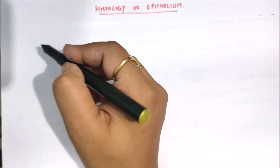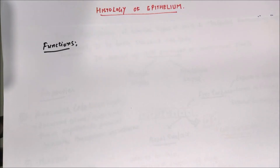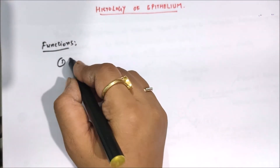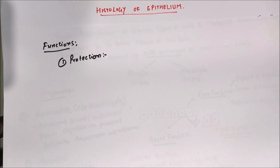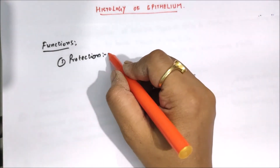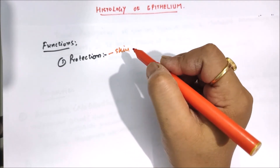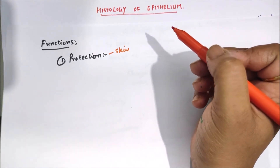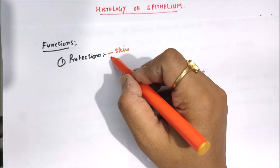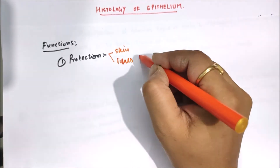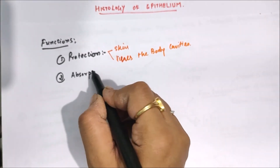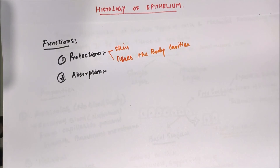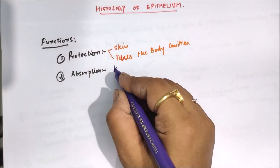Now let us discuss the functions of the epithelium. The first function is protection. The skin acts as a barrier between the surface of our body and the external environment, protecting our body. Epithelium also lines body cavities and protects them. Another function is absorption — some epithelium of organs like the kidney and intestine are absorptive in nature.